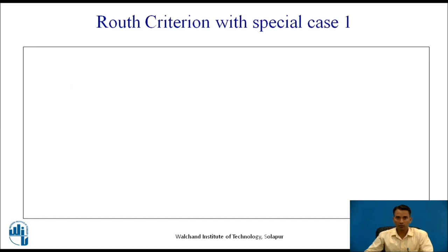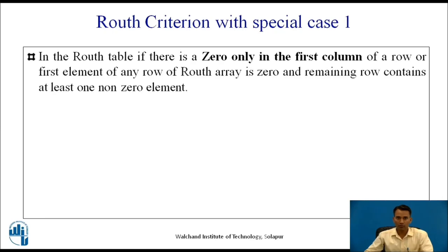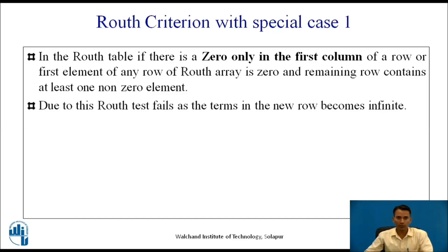Now let us see Routh Criteria with Special Case 1. In the Routh table, if there is a zero only in the first column of a row — that is, the first element of any row is zero and the remaining row contains at least one non-zero element — then it is known as Special Case 1. Due to this, the Routh test fails as the term in the new row becomes infinite.